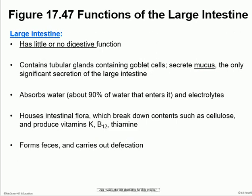Functions of the large intestine: it has very limited function when it comes to digestion, because everything has been digested at this point. It has goblet cells to make mucus, which helps in lubrication for the passage of feces. It helps absorb water, finalizing the absorption of water and electrolytes. It also has what are known as intestinal flora — healthy bacteria living in the large intestine — and we need those bacteria to make certain vitamins, for example vitamin K, vitamin B12, and thiamine. Lack of intestinal flora would lead to deficiency of these vitamins. And the last function of the large intestine is forming feces and carrying out the defecation process.